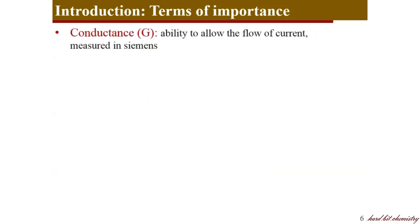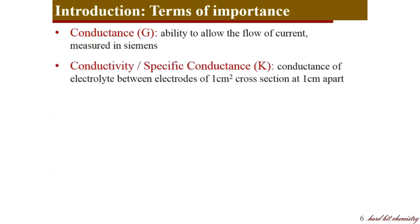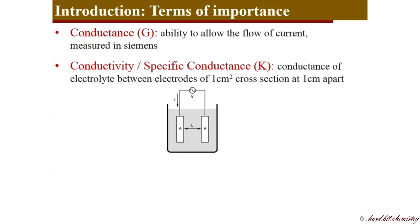Then there is conductance — the ability of an electrolyte to conduct electricity, represented by G. Conductivity or specific conductance is a standardized form of conductance, defined by the conductance measured in an electrolyte when kept between electrodes of 1 cm² area of cross section and when they are kept 1 cm apart.